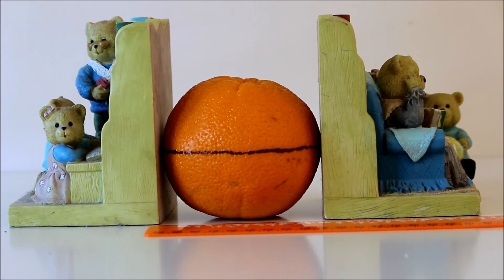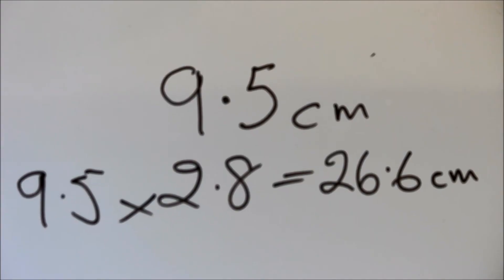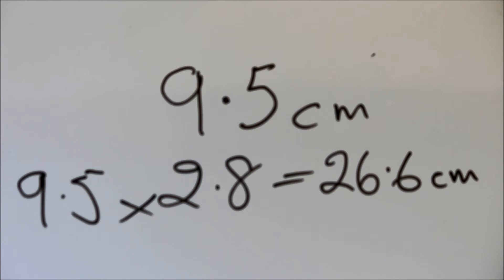Because Space City is 2.8 diameters above the Earth, we need to measure the diameter of the orange. Now our diameter is 9.5 centimeters, so 9.5 times 2.8 means that the Space City is 26.6 centimeters above the surface of our orange.